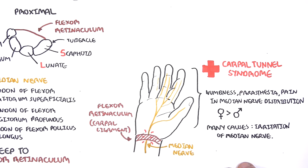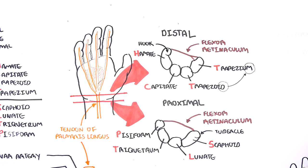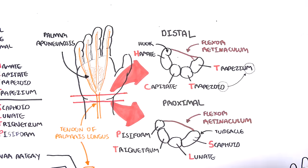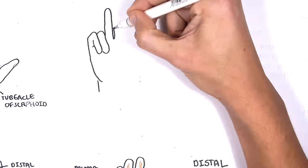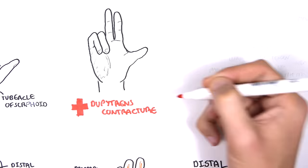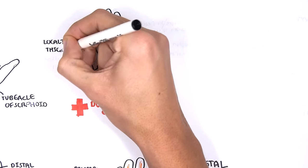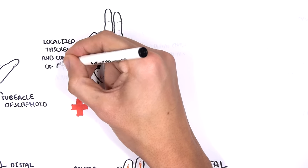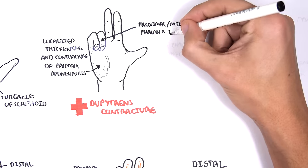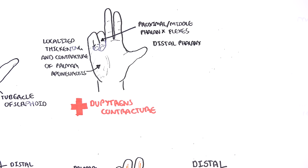Going back to the diagram — remember the tendon of palmaris longus, the tendon that goes over your flexor retinaculum that you can see on your wrist? This tendon has some branches that come off it and form what's called the palmar aponeurosis. Another clinical condition is Dupuytren's contracture, which is localized thickening and contracture of the palmar aponeurosis. It causes the proximal and middle phalanges to flex, while the distal phalanx is unaffected.